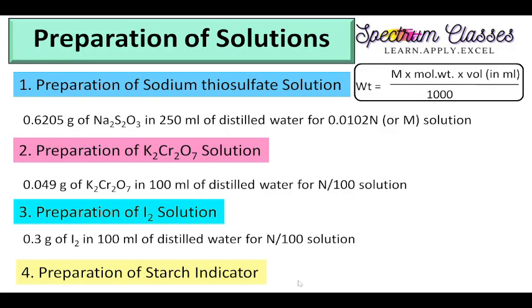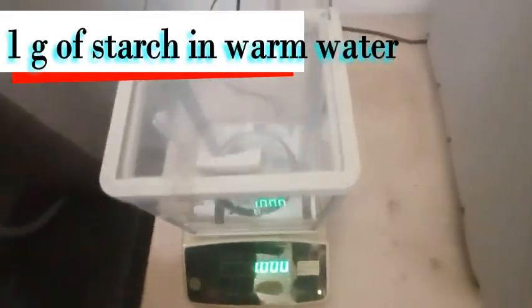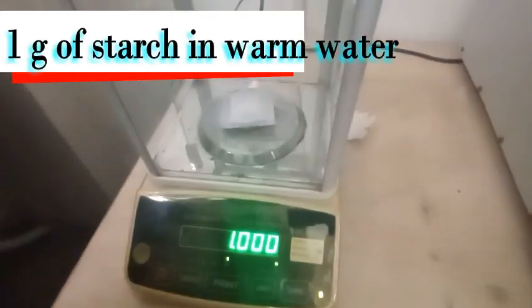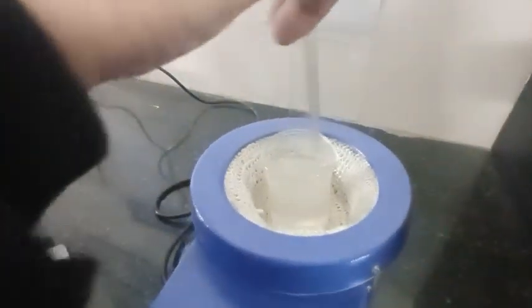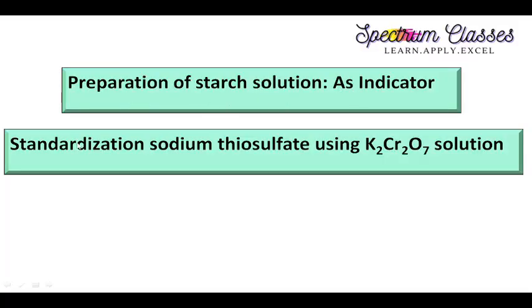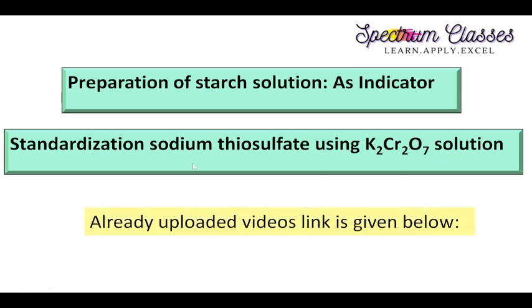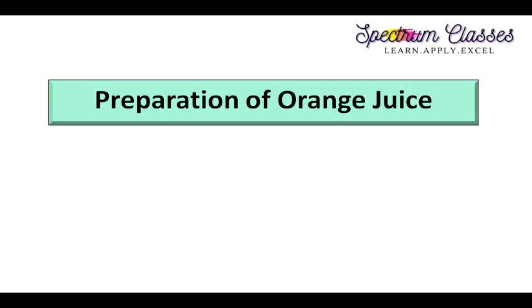Preparation of starch indicator: I have taken 1 gram of starch, added it to warm water, dissolved it, boiled it, and then cooled it down to room temperature. Related to the preparation of starch solution as indicator and standardization of sodium thiosulfate using K2Cr2O7 solution, I have already made dedicated videos — I will put all the links in the description box, so please check those.